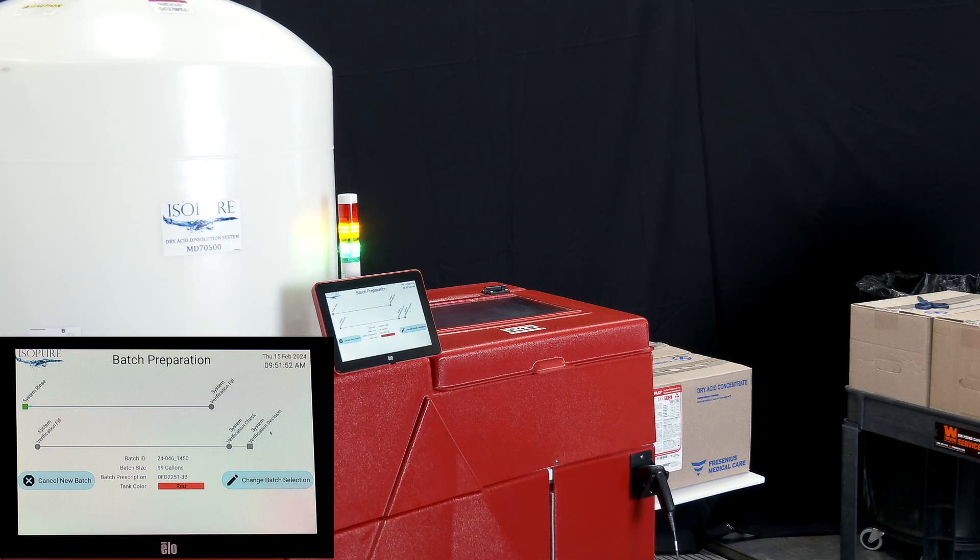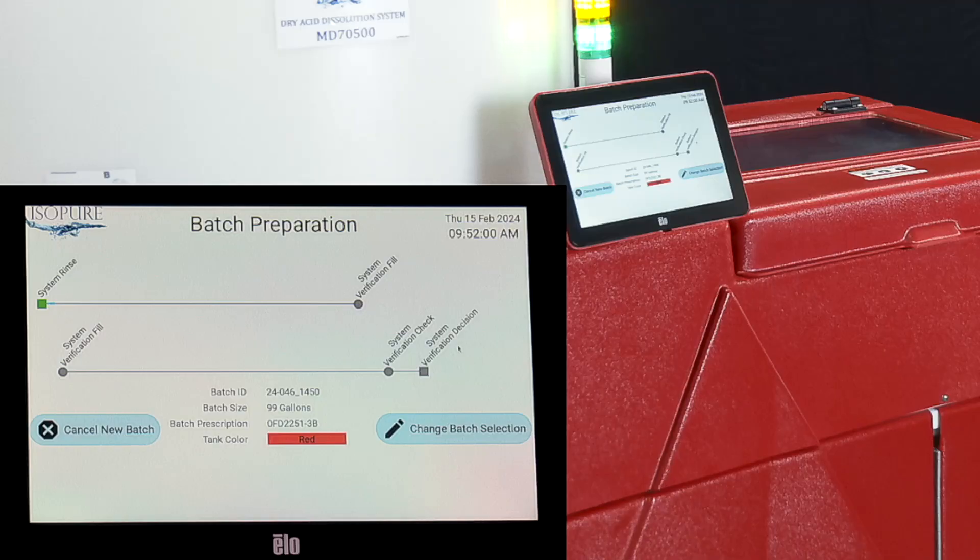Acumix will now perform the batch preparation process. During this step, the tank performs a rinse and self-verification. At a maximum flow rate of 3 gallons per minute at PSI 60, a 99-gallon batch should take about an hour to complete this step.